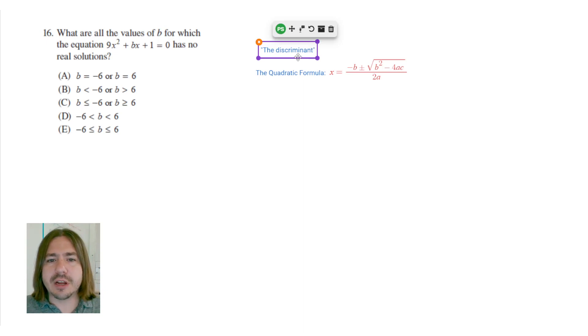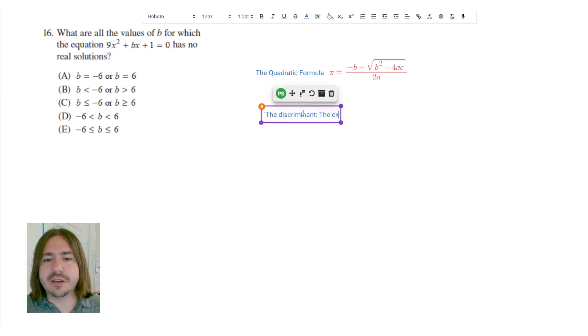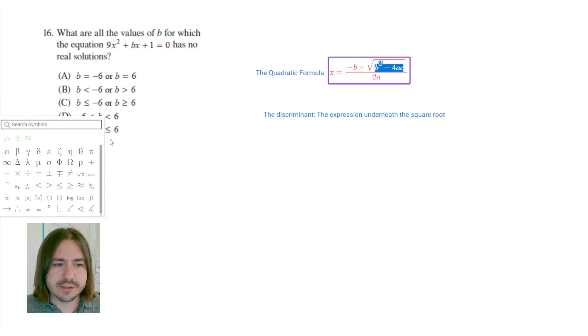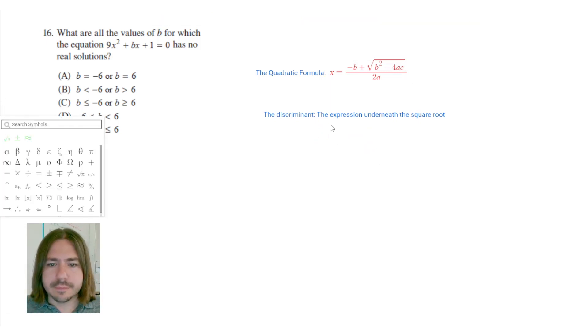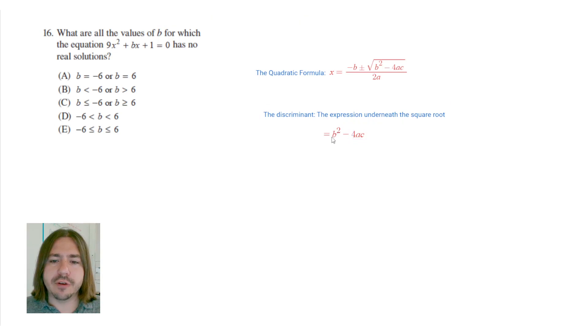The discriminant is that expression that's underneath the square root, which is this B squared minus 4AC business. So we can break this down into three categories, right? When you're trying to figure out what is going to determine how many real solutions you have, you want to be thinking about whether or not this number is positive, whether it's negative, or whether it's 0. If the discriminant is negative, then there'll be no real solutions.